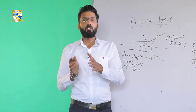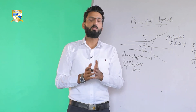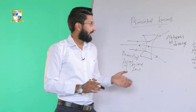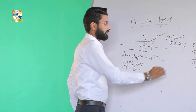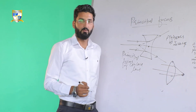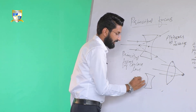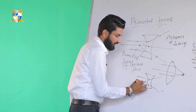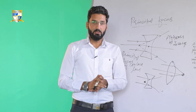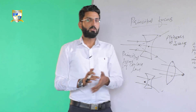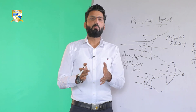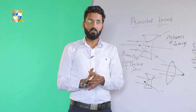So to summarize: spherical lenses are bound by two spherical surfaces. The convex lens, also called the converging lens, has its principal focus where rays actually converge. The concave lens, also called the diverging lens, has its principal focus where rays appear to diverge. In the next lecture, we will discuss image formation — the characteristics of image position, nature, and size using the lens formula.